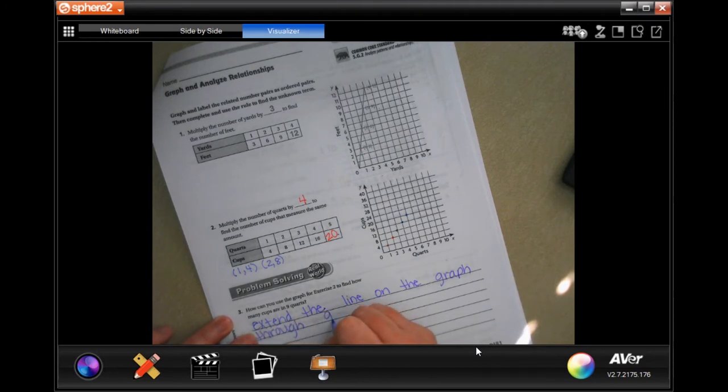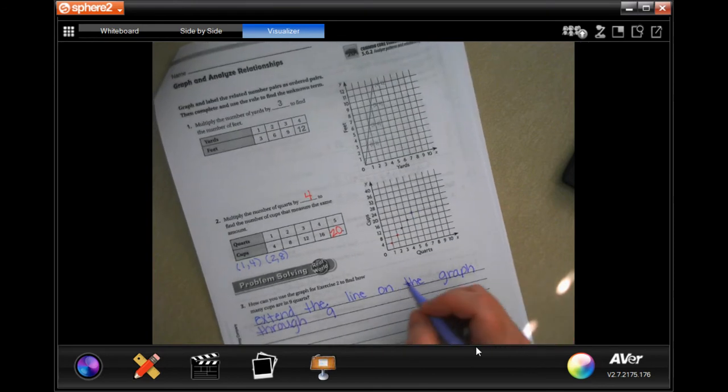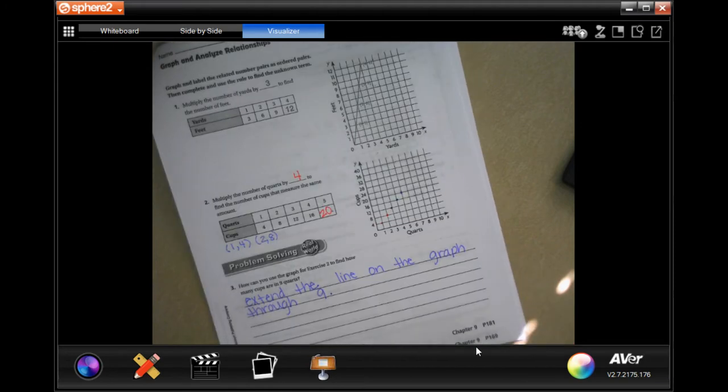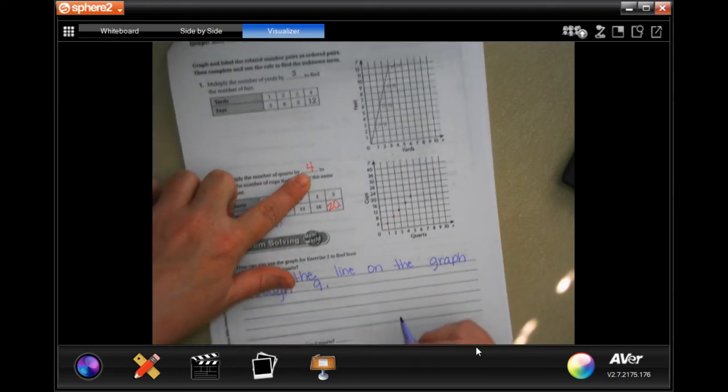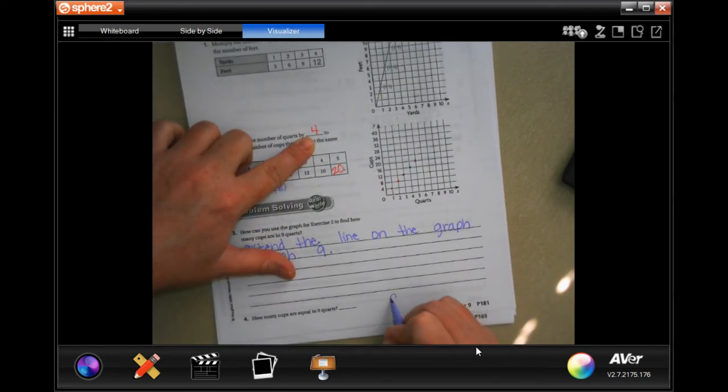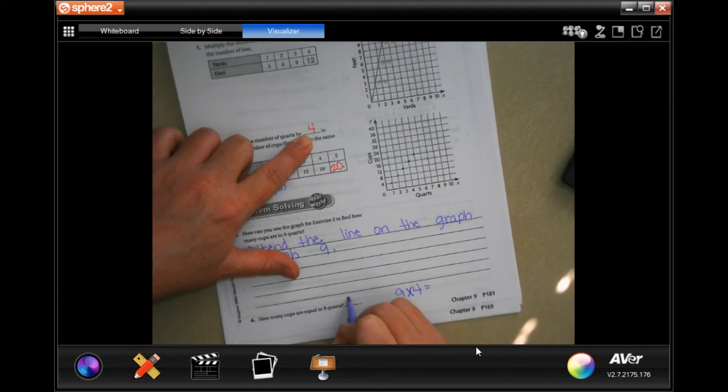How many cups are equal to nine quarts? Well, we're multiplying it by four up here, so we're gonna go nine times four, and that's how we would show our work. So it would be thirty-six.